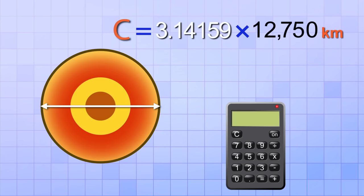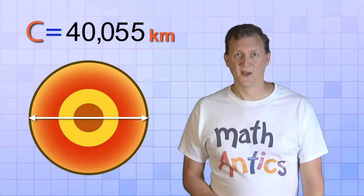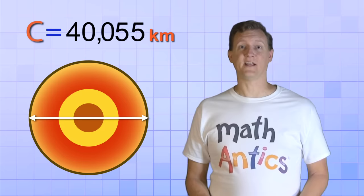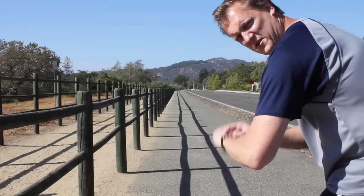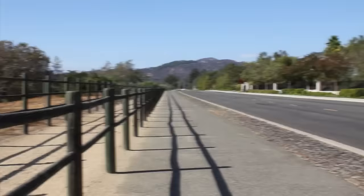Now I'm definitely going to use a calculator for this. And I'm going to use a more accurate version of Pi, since this is such a big distance. So 12,750 times 3.14159 equals 40,055 kilometers to the nearest kilometer. Wow! That's a pretty big circumference! No wonder it takes so long to go all the way around the Earth.